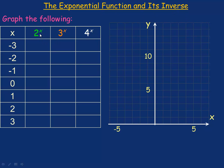First of all, we're going to graph three different exponential functions: y equals 2 to the x, y equals 3 to the x, and y equals 4 to the x. We're going to use a table of values, taking x from negative 3 to negative 1, then 0, and then 1, 2, and 3.